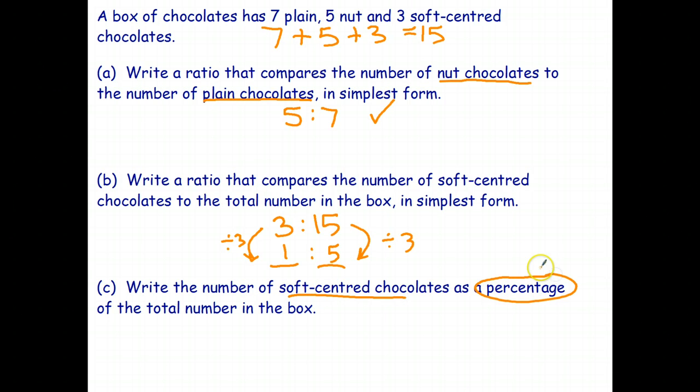Now, write the number of soft-centered chocolates as a percentage of the total number. So, let's just write that as a fraction first. We write that as one is to five is the ratio as a fraction, and hopefully you know that one-fifth is equal to 20%. So, you can also write ratios as percentages.